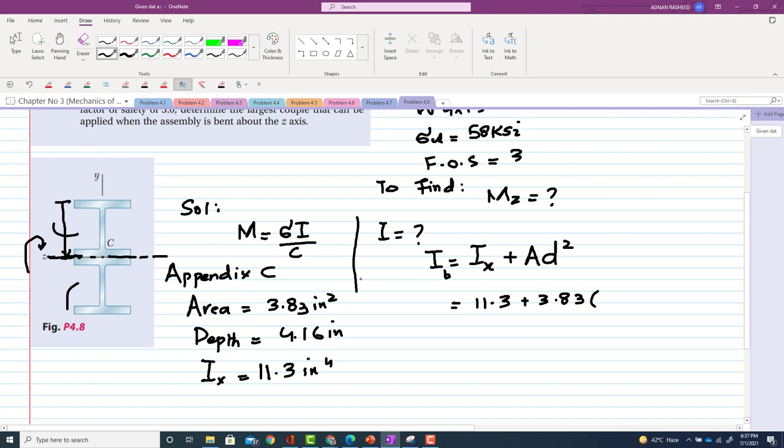Now what is the value of d? d is the distance from the neutral axis to the centroid. This d will be equal to total depth over 2, which is 4.16 over 2 inches, so d comes out to be 2.08 inches.